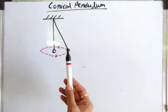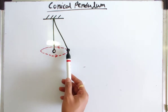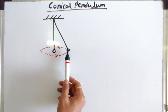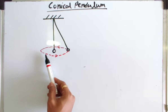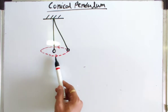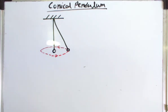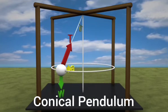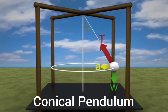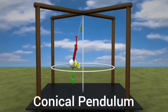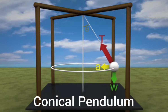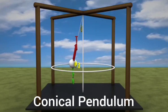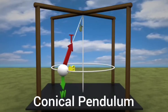A conical pendulum is a simple pendulum given such a motion that the bob describes a horizontal circle and the string describes a cone in space. In this animation of conical pendulum, we can see the bob moving in a horizontal circle and the string attached to the bob describes a cone in space.